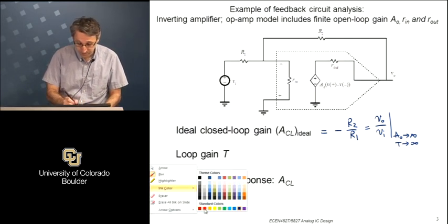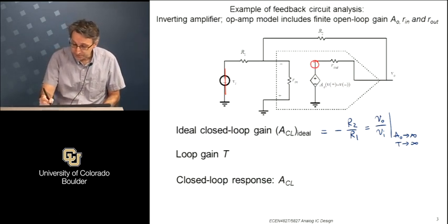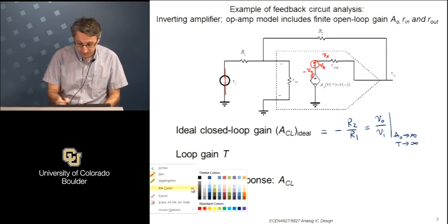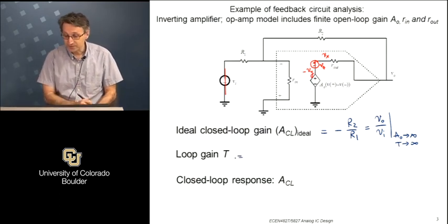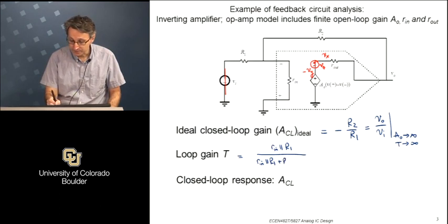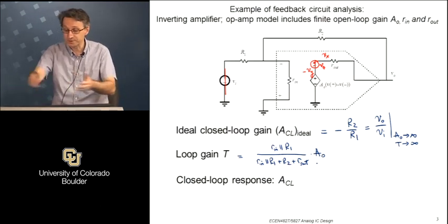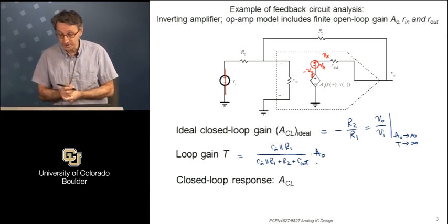Then you find the loop gain. We use the same approach as before: insert the test source V_z right here, this is V_x minus V_y, and you go around the loop. You find that the loop gain in this case is going to be a slightly different voltage divider: R_in parallel R1, over R_in parallel R1 plus R2 plus R_out, times A_0. That's the loop gain - almost by inspection, you can just trace the signal propagation around the feedback loop.